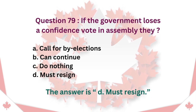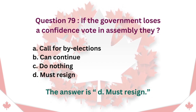Question 79: If the government loses a confidence vote in the Assembly, what must they do? A. Call for by-elections. B. Can continue. C. Do nothing. D. Must resign. The answer is D. Must resign.